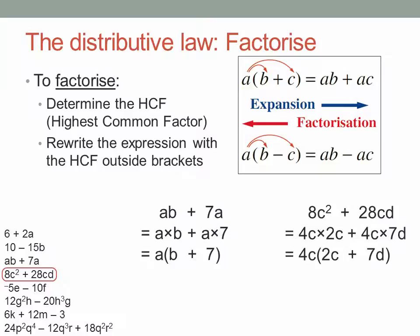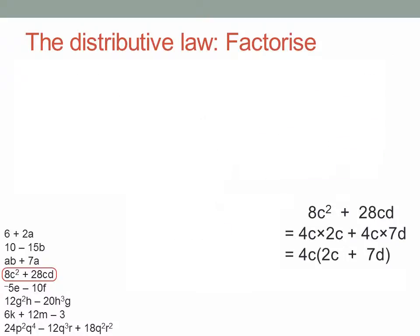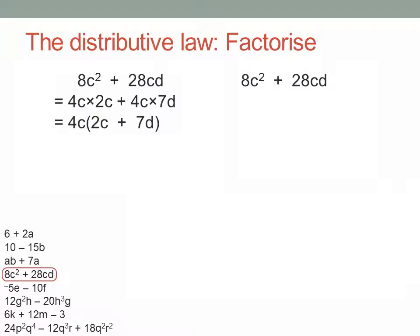The thing is, even if you don't at first see the whole of the common factor, you can still end up with the right answer. Let me show you how that works. Suppose in that last example you only saw the 4 at the start. You only take out the 4 as a common factor. But look inside the brackets. Now you can see clearly that there's another common factor, the c. So take it outside the brackets as well, and you end up with the same answer.